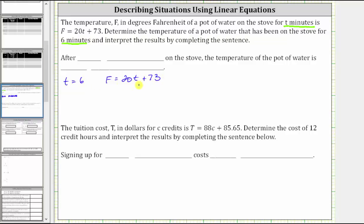Substituting six for T gives us F equals 20 times six plus 73.